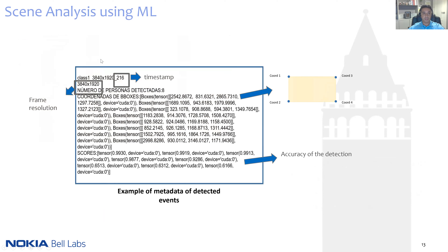In this slide, you can see an example of the generated metadata reported by the machine learning algorithm. It contains information such as the video resolution, timestamp, the number of people in the frame — in this case eight — and for each one of them, we report the bounding box in terms of coordinates and the accuracy of the detection.